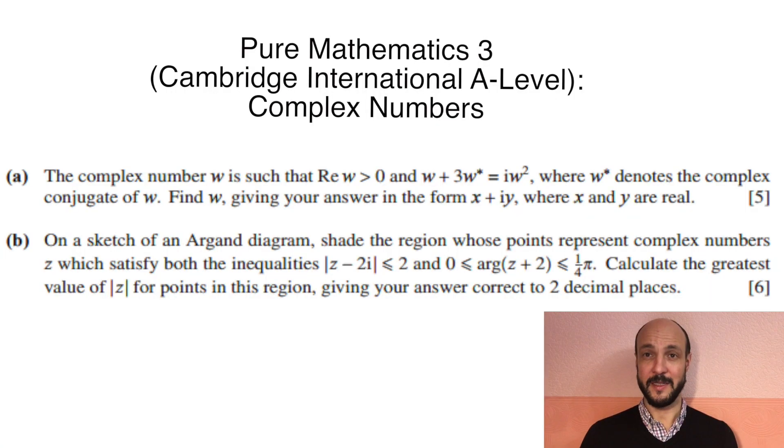Hello and welcome once again to MathsWithDavid.com. I'm David Swanson and today we're looking at a Cambridge International A-Level question from the P3 Pure Mathematics 3 paper on the subject of complex numbers. So as always we'll start by reading out the question. Part A: The complex number W is such that the real part of W is greater than zero and W plus 3 times the conjugate of W is i times W squared, where the conjugate of W denotes the complex conjugate of W. Find W giving your answer in the form X plus iY where X and Y are real.